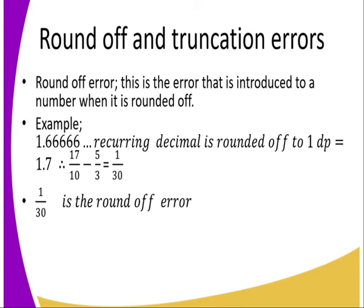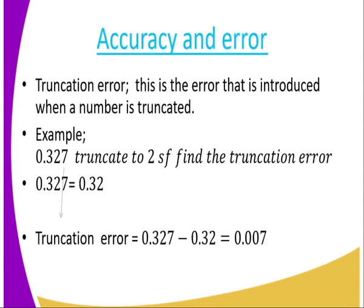Now we have the round off and truncation error. We have a number 1.66666. When rounded off it gives 1.7, and 1.66. So 17 over 10 equals 1.7 when rounded off. When we truncate it we get 5 over 3, and subtracting gives 1 over 13 — that is the round off error. For the truncation error: truncating gives 0.32, stated to two significant figures, and the truncation error is 0.007.